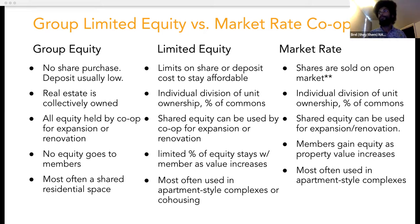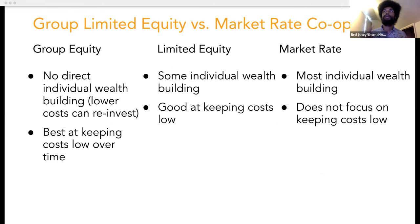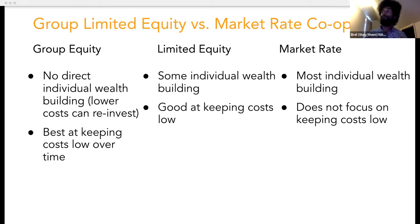Limited equity co-ops are most often seen in apartment-style complexes or in co-housing, and occasionally in the shared residential space. If there's a short takeaway from each of these models: group equity housing co-ops are the best at keeping costs low over time, but they don't produce direct individual wealth building. Market rate co-ops provide the most opportunity for individuals to build wealth based on real estate appreciation, but they don't necessarily focus on keeping costs low or keeping units accessible. And limited equity housing co-ops try to split the difference — there's some individual wealth building, and they're pretty good at keeping costs low over time.